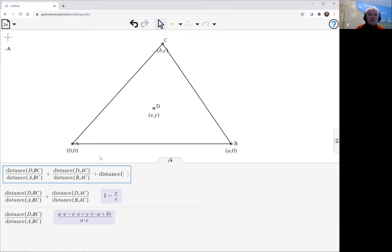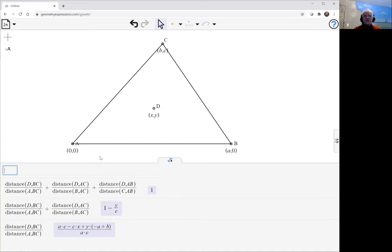Distance D, D to AB. Clearly that is Y over distance. And there we have the result.